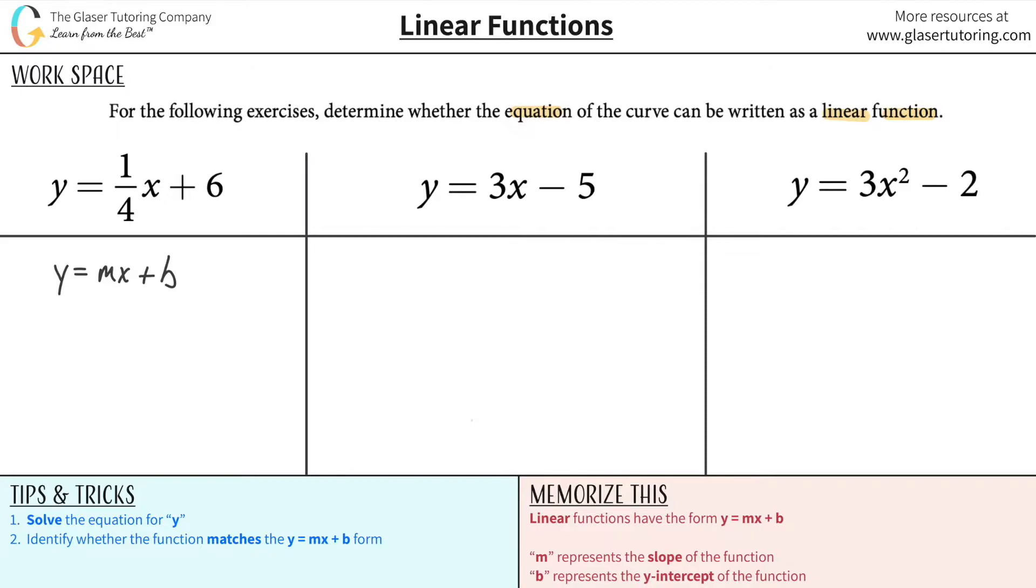And then I have to now identify whether this thing matches up to my linear equation, y equals mx plus b. So I notice the y's match, I notice the x looks like it's in about the appropriate place, and then I basically realize that this one-fourth represents the slope, and then this six represents the b value, which is the y-intercept.